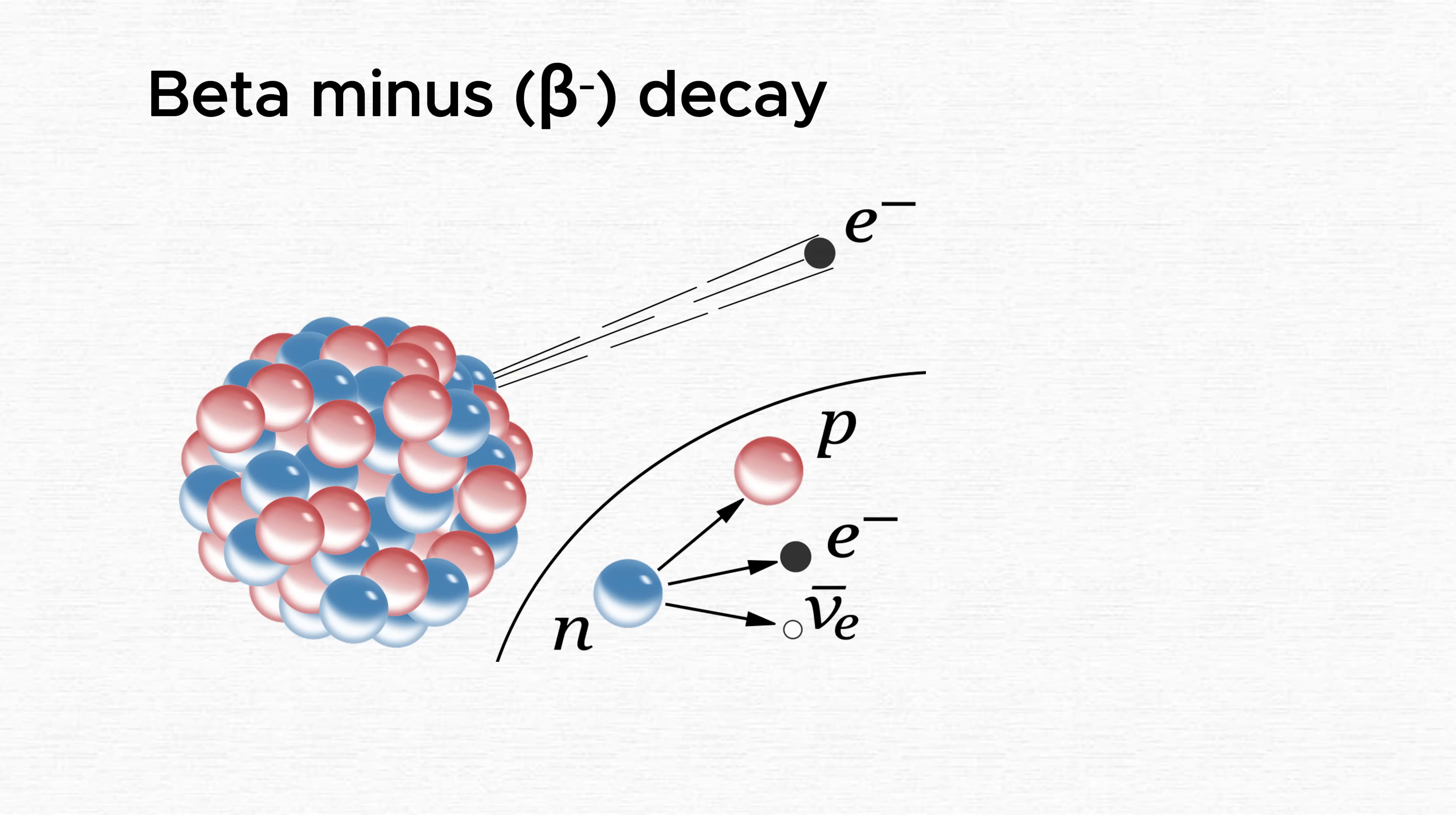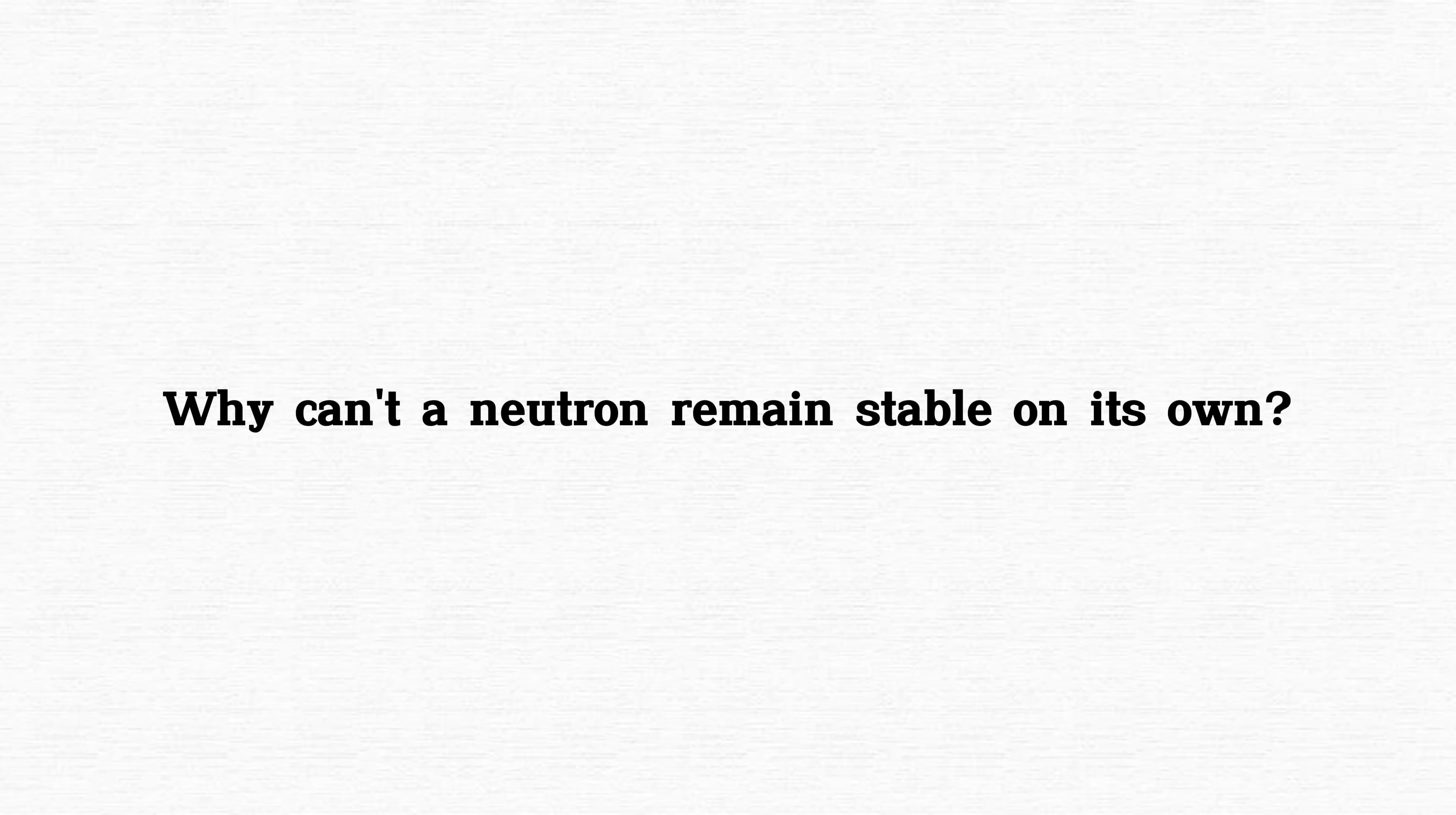Specifically, when a neutron decays into a proton, it releases an electron and an antineutrino. Beta-plus decay, we'll get to that later. First, let's explore why neutrons are so fragile.